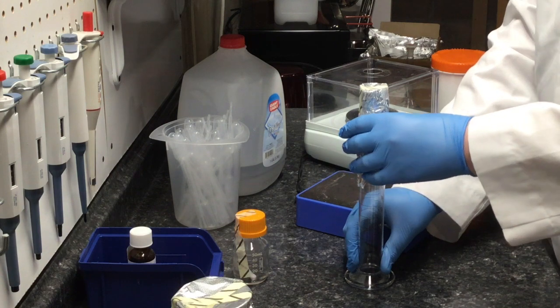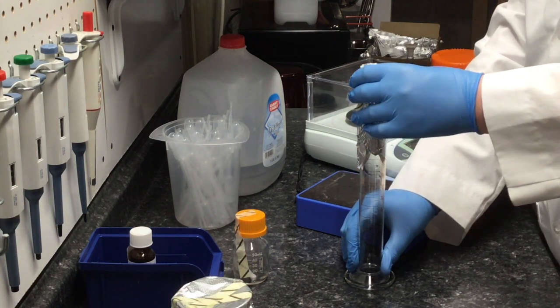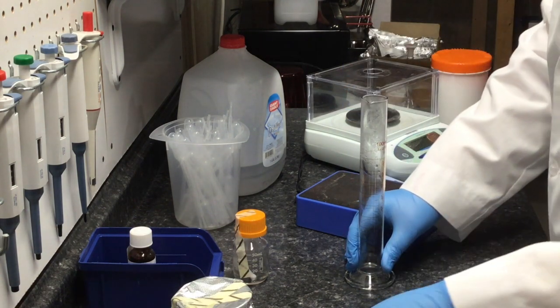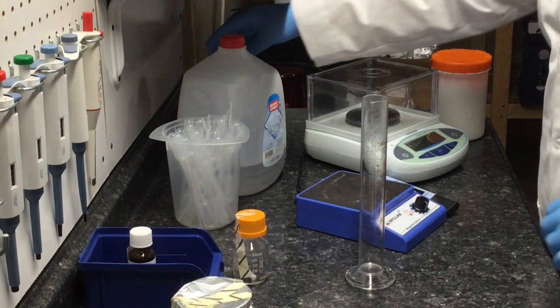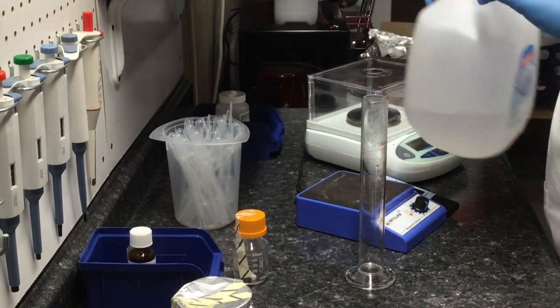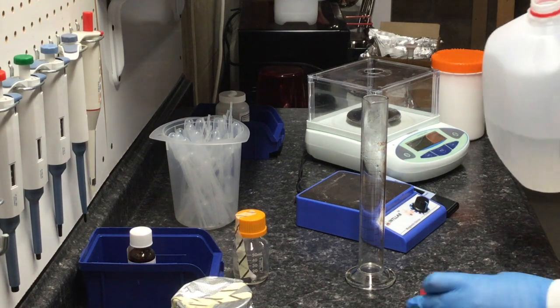I am now going to measure 40 milliliters of distilled water. Next, I will add the sodium chloride and then top it off to 50 milliliters once the sodium chloride is added.